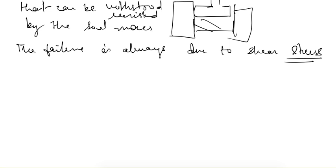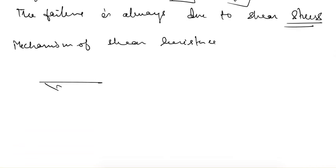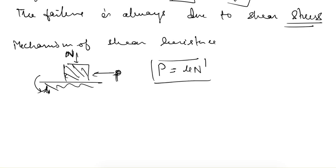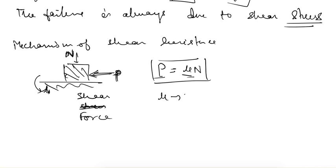The next question is how soil resists shear stress — that is, the mechanism of shear resistance. It can be understood with the block-and-surface analogy. If there is a block on a surface with friction coefficient μ, a horizontal force P is applied and a normal force N acts from the top. If P is sufficient to just move the block, then P = μN. So P is similar to shear force, and it is proportional to both the friction coefficient and the normal force.